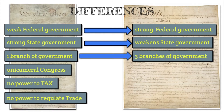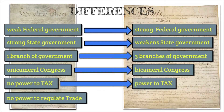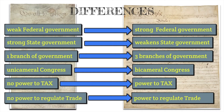Under the Articles, there was one branch of government — just the legislative branch. Now under the Constitution, we're going to see three branches: the executive, legislative, and judicial. In the legislative branch under the Articles, there was a unicameral Congress; now we're going to have a bicameral Congress with two houses. Under the Articles, the government did not have the power to tax — the new government under the Constitution will have the power to tax. Also, the national government did not have the power to regulate trade under the Articles, and that power is now given to the national government under the Constitution.